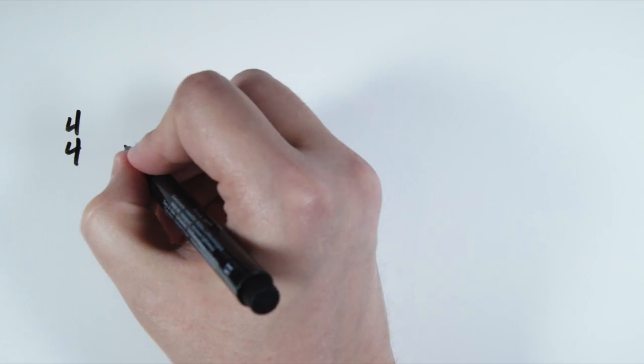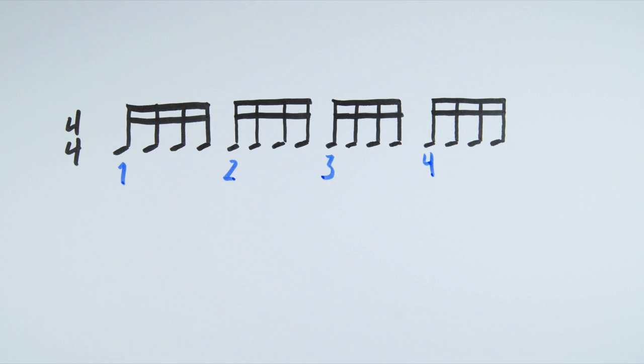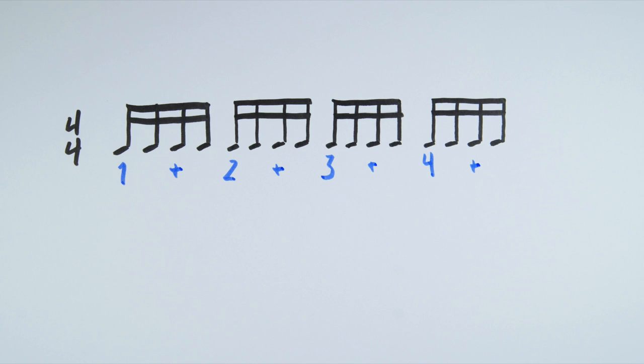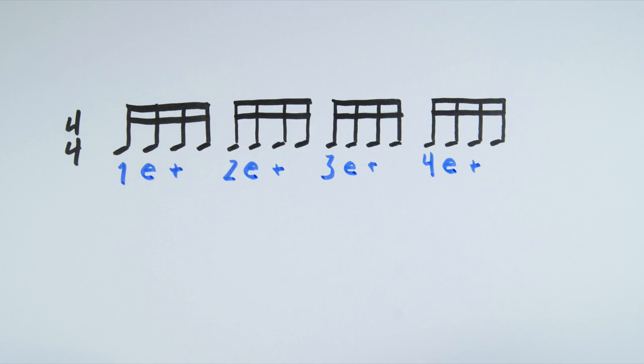Let's fill in what we know so far. We know that each downbeat gets a number. In this case, 1-2-3-4. We also know the upbeat gets the syllable AND. Now let's fill in for the new sixteenths. The second sixteenth of each group gets E and the fourth sixteenth of each group gets A, giving us 1-E-and-A.